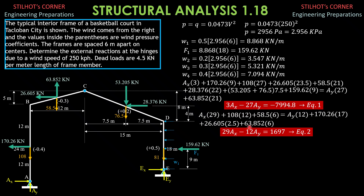Solving Equations 1 and 2 simultaneously using a calculator, we have AX equals 189.8 kilonewtons — correct, rightward — and AY equals 317.2 kilonewtons. Because both are positive, they are directed as assumed in the figure.